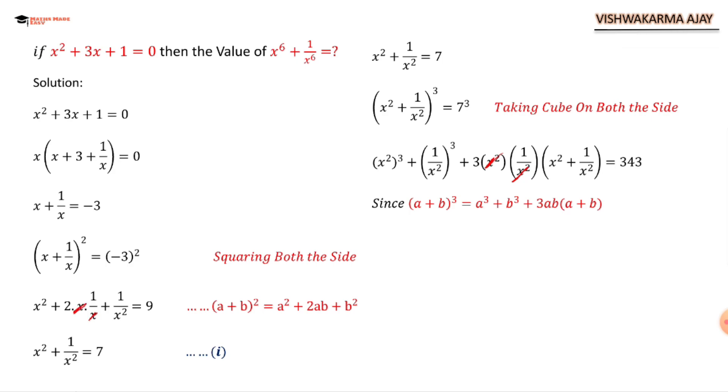Now applying the law of indices, we get x⁶ + 1/x⁶ + 3(x² + 1/x²). So from here, this will be coming from equation number 1: x⁶ + 1/x⁶ + 3(7). Since this is equal to 7 as per our equation number 1, that's 3 × 7 = 21.